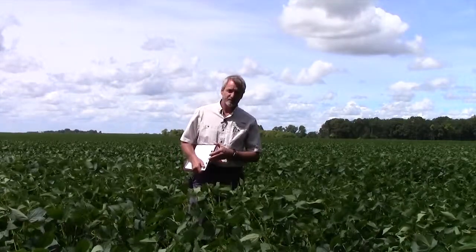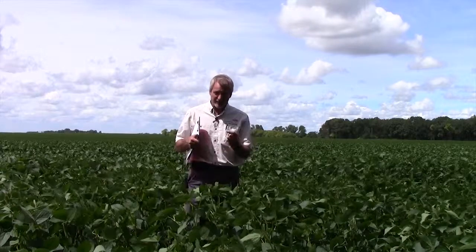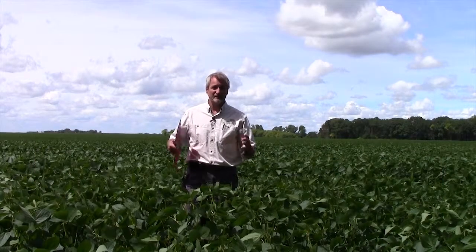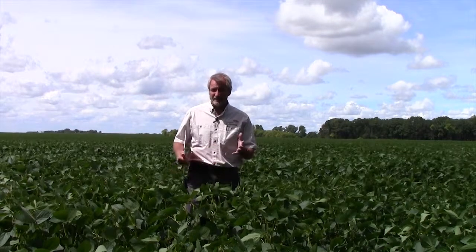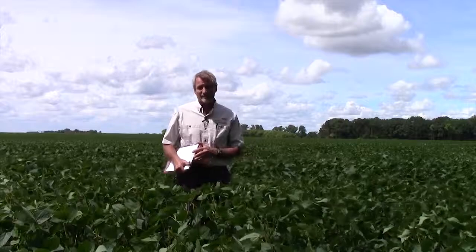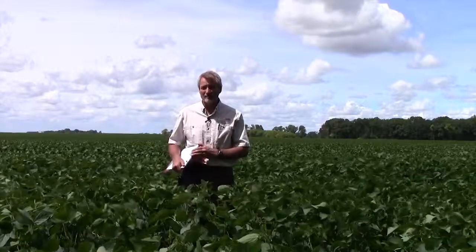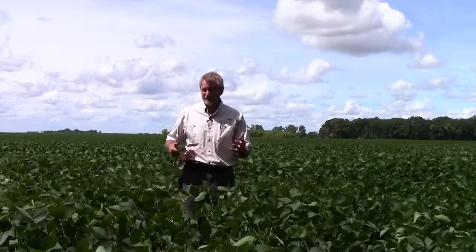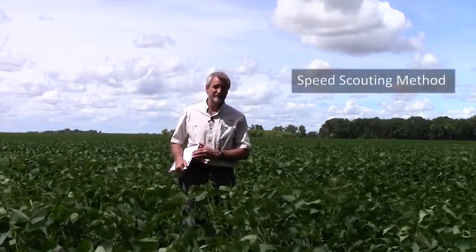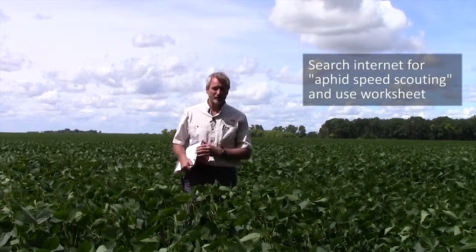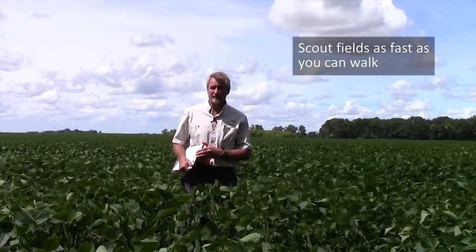So how do we actually scout for soybean aphids? The threshold is 250 aphids per plant — that's a lot of aphids to count. They're very small and they develop in colonies, and counting a bunch of plants in a field to see if you have an average of 250 aphids per plant can take a lot of time. The entomologists doing aphid research understood this was a good threshold but that scouting for it would be challenging. So they developed a method called the speed scouting method. There's a worksheet you can find by searching 'aphid speed scouting' on a search engine, and this worksheet makes scouting for aphids much more simple and rapid — you can literally scout fields as fast as you walk.